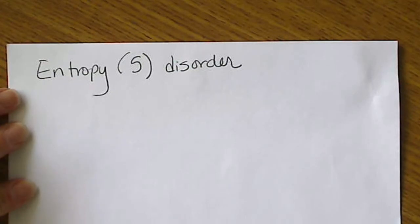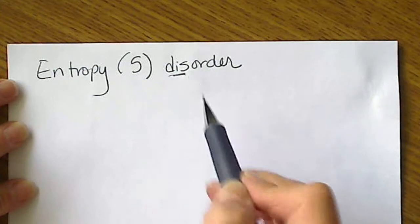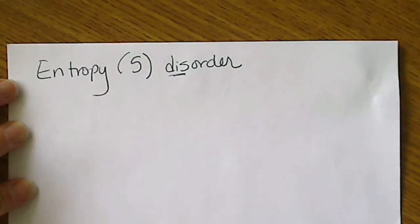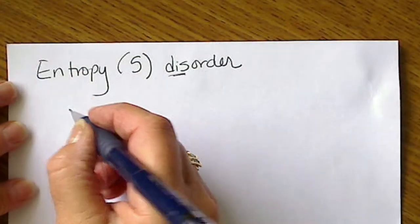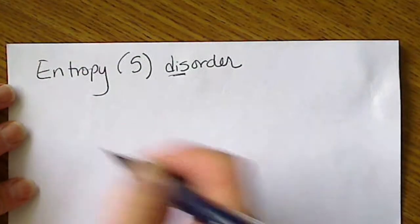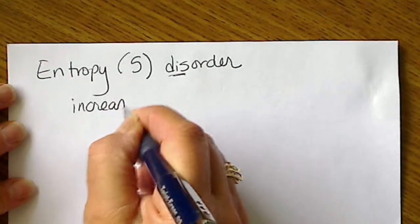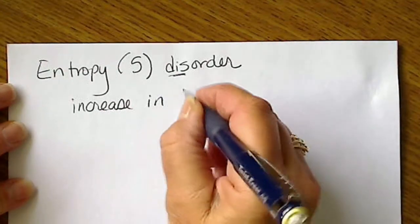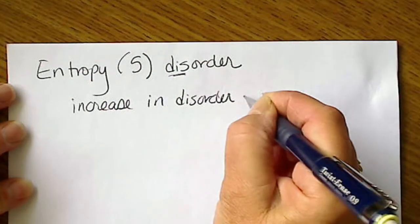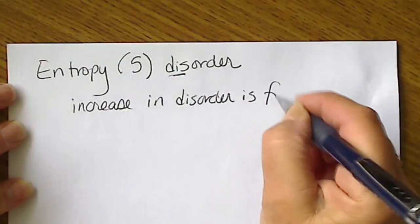So we usually don't define something in terms of what it isn't. So disorder is, of course, the opposite of order.